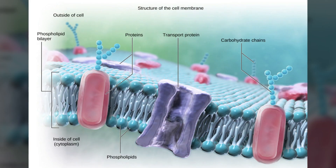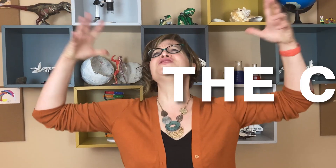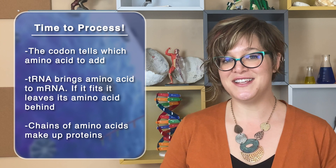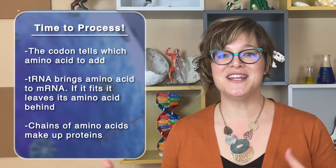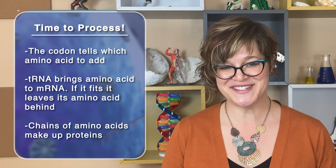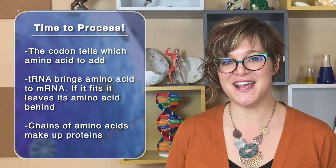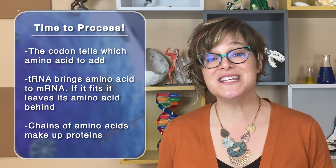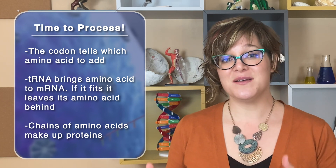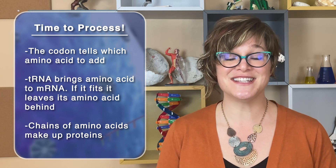The proteins created through translation can have many different functions within the cell, and together these functions create different traits. This whole process of using genes to create proteins is called the central dogma. The codon is the yin to the anticodon's yang. The anticodon is the link between the mRNA and the amino acid sequence. The tRNA has an anticodon on one side and an amino acid on the other. When tRNA docks with the mRNA, its amino acid drops off and joins the ever-growing chain.